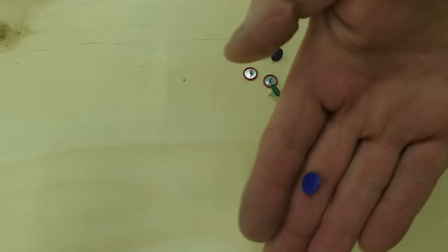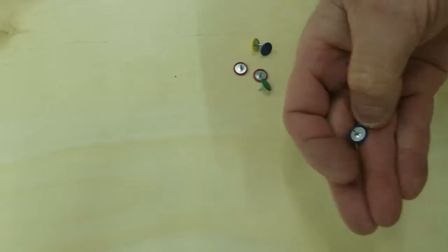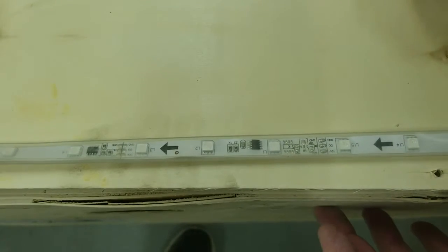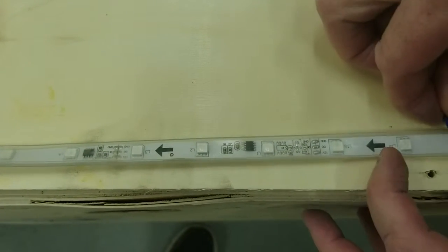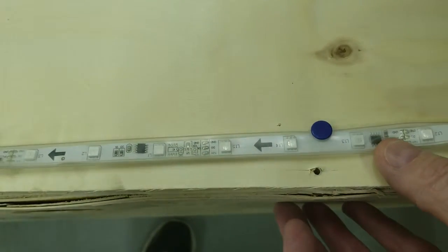What you can use is little thumbtacks like this with the flat head. When you go around these corners, don't go through the actual lights or the silicone sleeve, just right up against the edge of it as close as you can get and push in and let the flat head of the thumbtack hold it down.